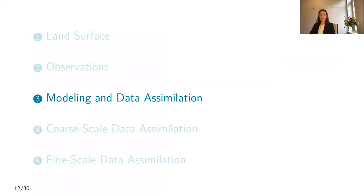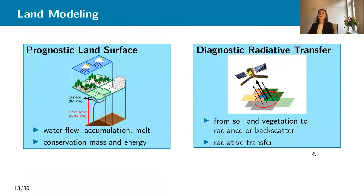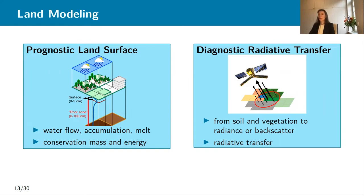Our second tool was models. Land modeling is composed of two parts. We have the prognostic land surface models, which basically are a compilation of decades of scientific insight in physical processes put into computer models that reflect conservation of mass and energy. The prognostic land surface model also has memory, so it produces forecasts based on a previous state. The diagnostic part in our land modeling system is typically the conversion of land surface variables to something that the satellite sees via radiative transfer — for example, going from soil moisture to radiance or backscatter.